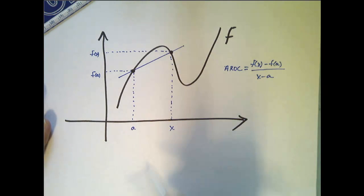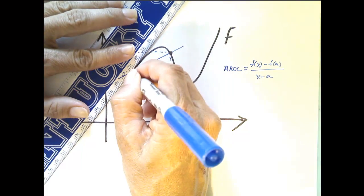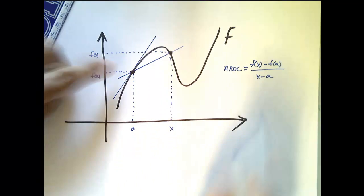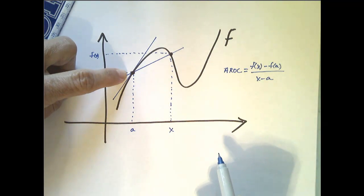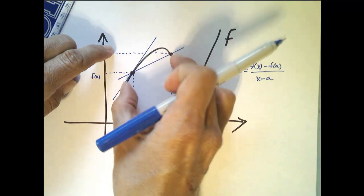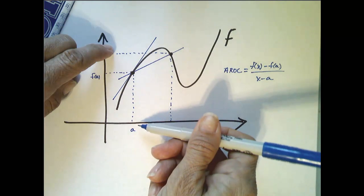And if I wanted to know the instantaneous rate of change of this function graphically, that's going to be represented by the slope of the tangent line at a, which we get by finding the limiting value of the slopes of the secant lines as I move this point closer and closer to a,